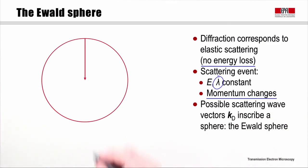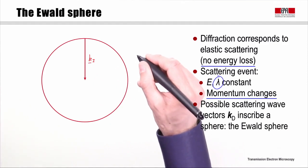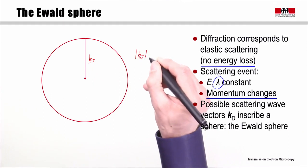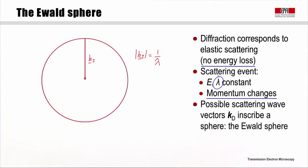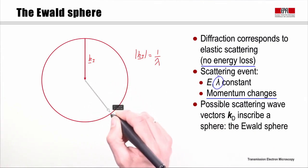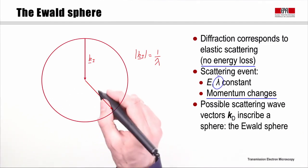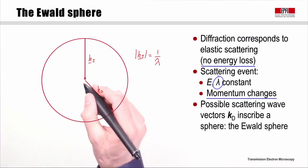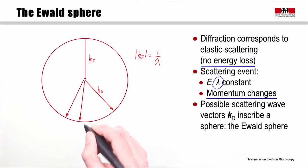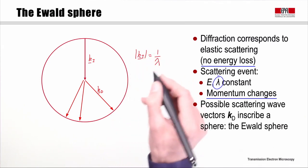We can describe this on a wave vector diagram. Here I have a wave vector for the incident electron beam, Ki. As we have previously seen, the length of Ki — its modulus — equals 1 over lambda, the wavelength of the electron beam. I'm going to say that here I have some diffraction event. The scattering from this event could occur in one of many different directions. We could have a diffracted wave vector here, or diffraction in this direction, or this direction, or one of many different possible directions. While the angle of scattering may change, the length of these diffracted beam wave vectors cannot change — they all have the same length as that of the incident electron beam, 1 over lambda.